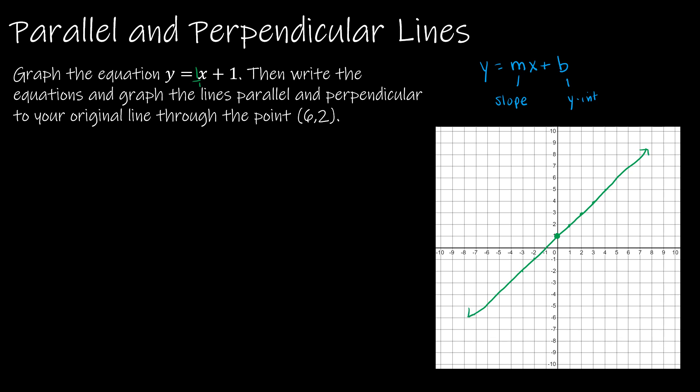That's my first graph. Now, it also says, write the equations and graph the lines parallel and perpendicular to the original line through the point 6, 2. So here's the point 6, 2. And I want to find the equation of the line that's parallel and perpendicular. So through 6, 2, it would look something like this. Let's start with parallel.